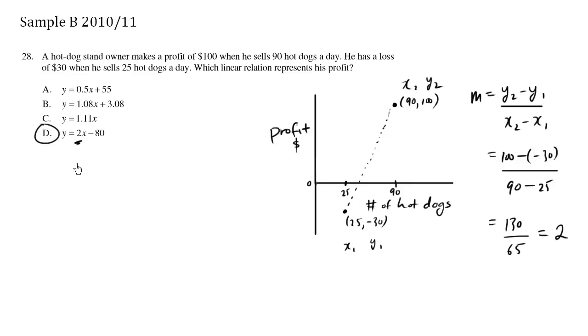But for practice let's try actually figuring out how this y-intercept is negative 80. We have a slope and we have a point, we'll just use this point here. So we have y minus y1 equals m times x minus x1, this is the slope point form. So we have y minus y1, we'll just use this point over here, 100, and the slope is 2 times x minus the x value which is 90.